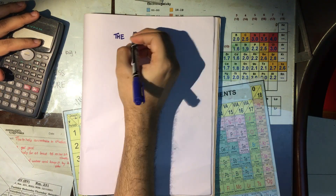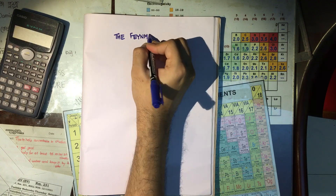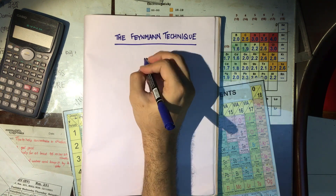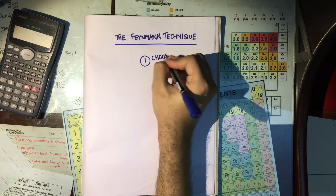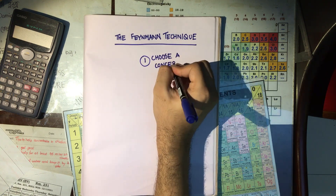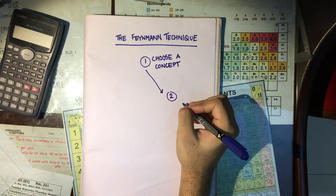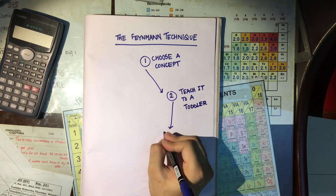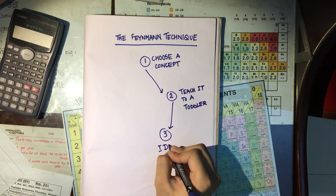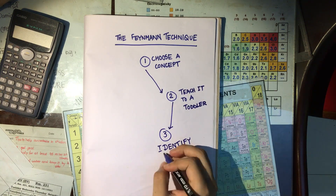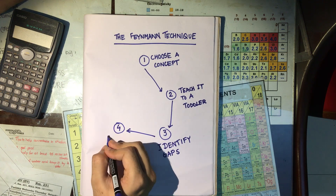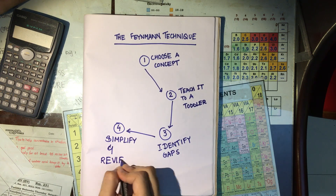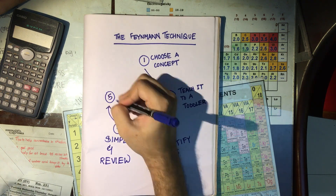The Feynman technique involves some simple steps: 1. You choose a topic that you want to learn effectively. 2. You teach it to a toddler. 3. Identify the gaps in your learning. 4. Simplify your notes and review. And lastly, 5. Repetition.